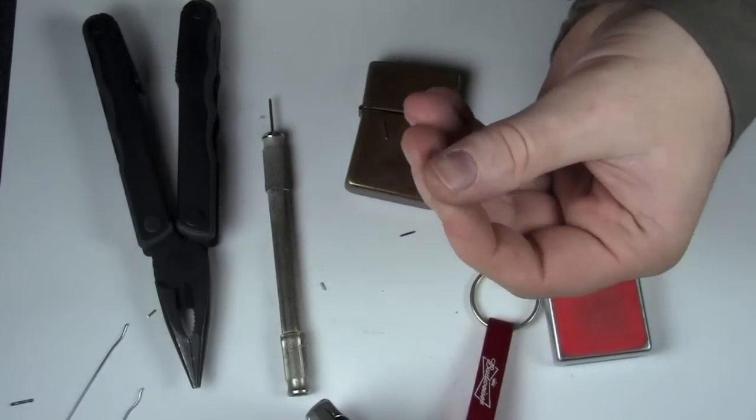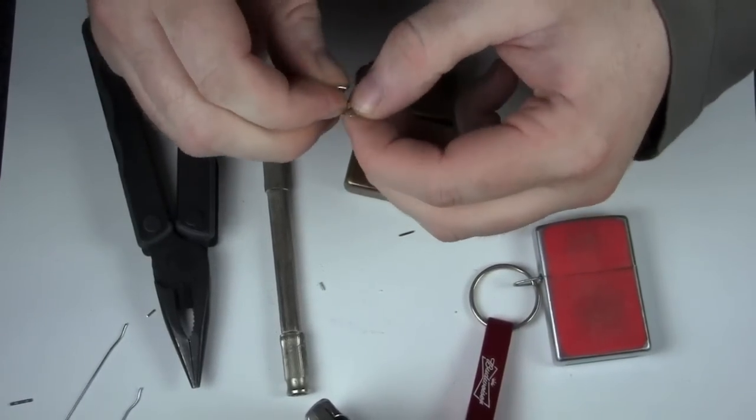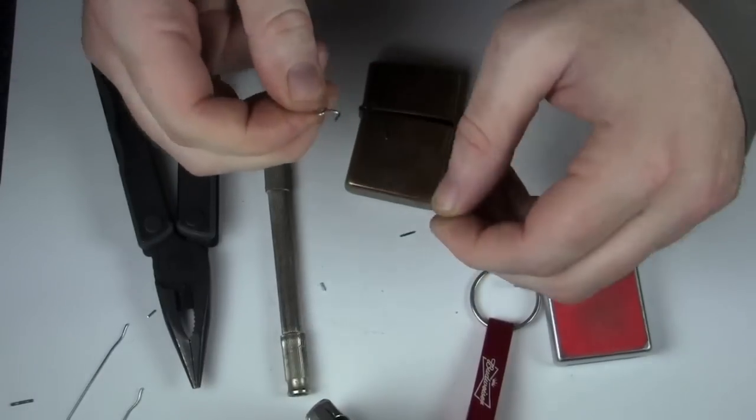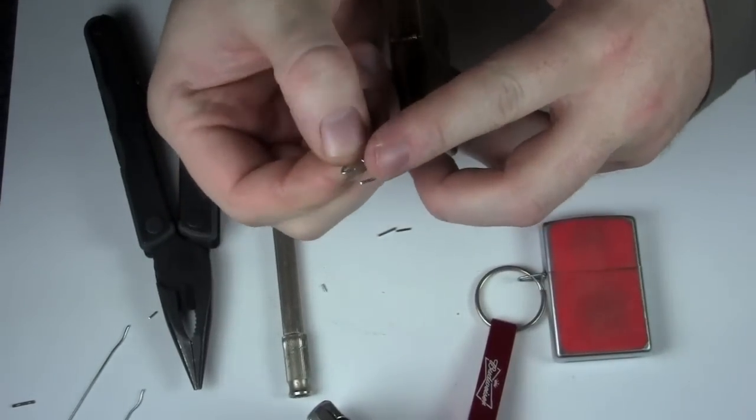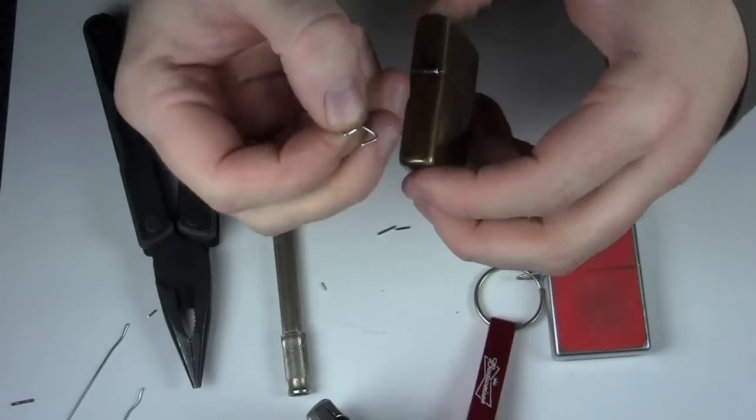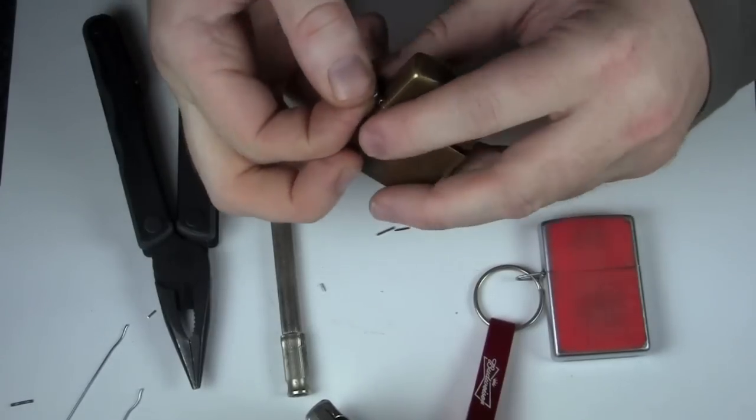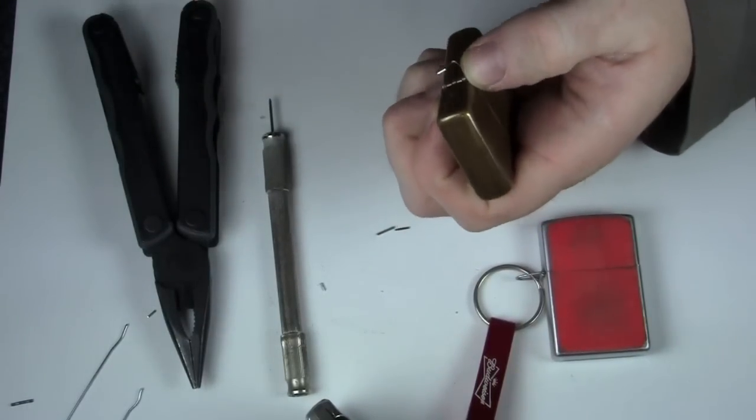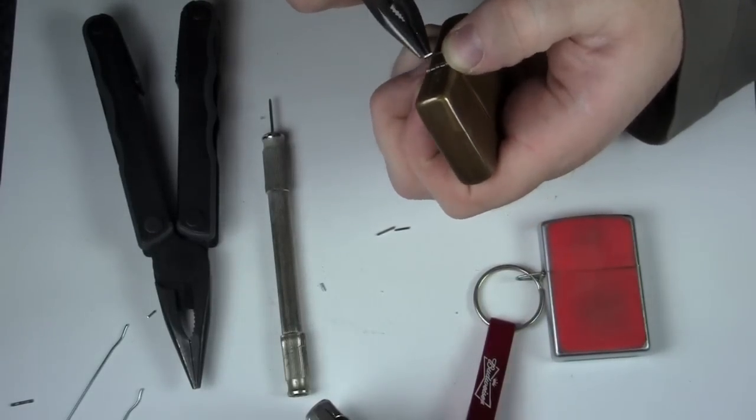I mean this isn't rocket science so it's going to be okay no matter what we do as long as we get it in the hinge. Alright so you can see hopefully I have one side that's a little longer one side is a little shorter. Let's insert the longer end in the hinge and then we can kind of take the pliers and wrestle that other side in.